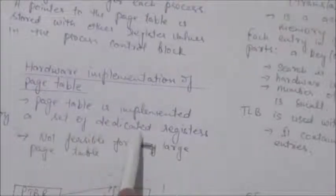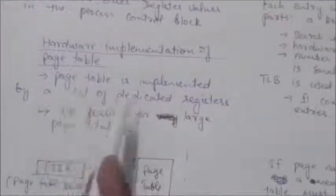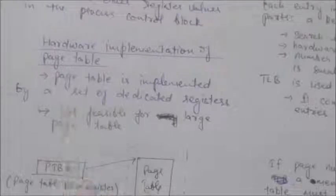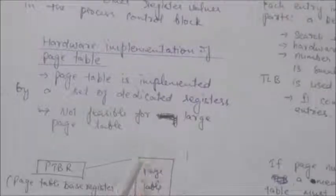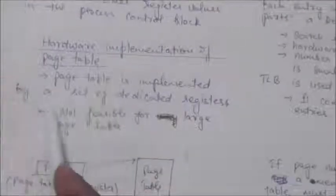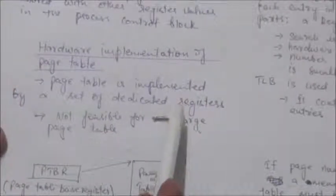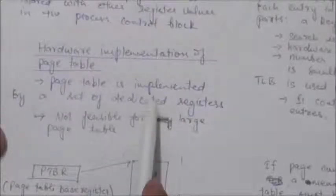The registers should be built with very high-speed logic so that paging address translation is efficient. This implementation of page table by registers is good for small page tables, but it is not feasible for large page tables.